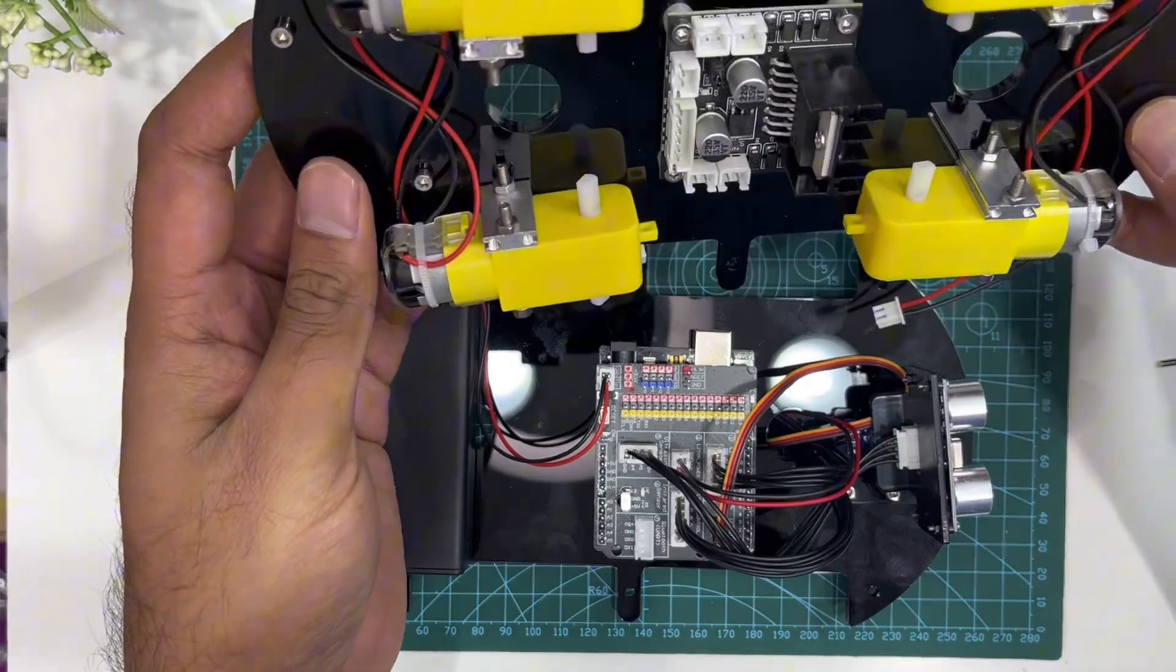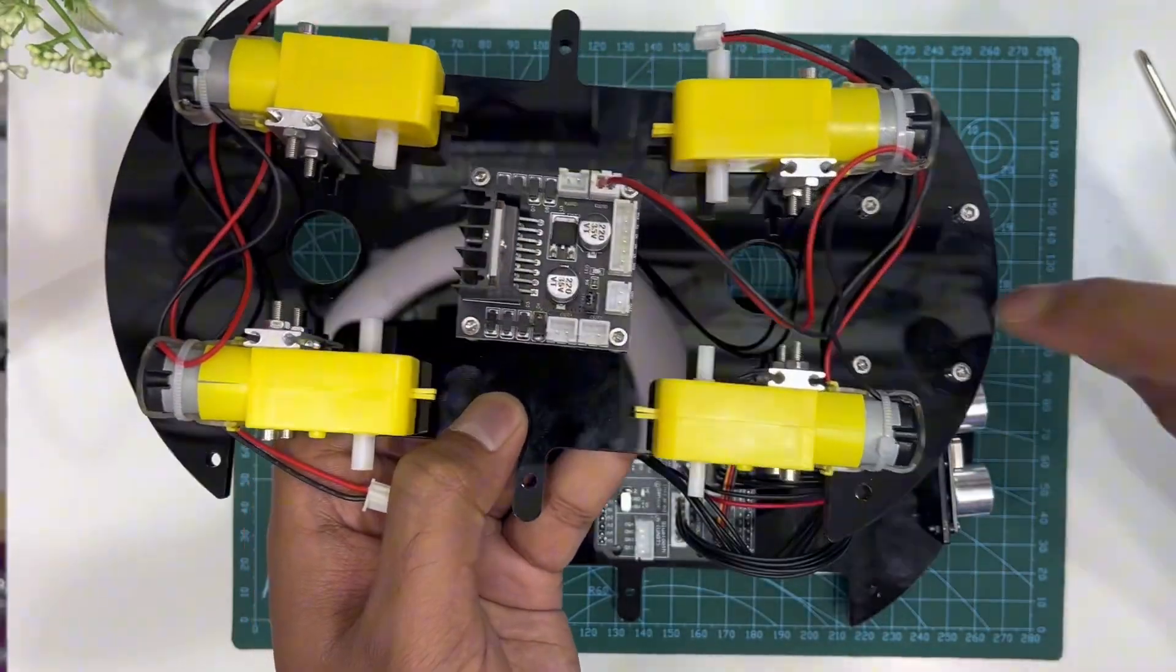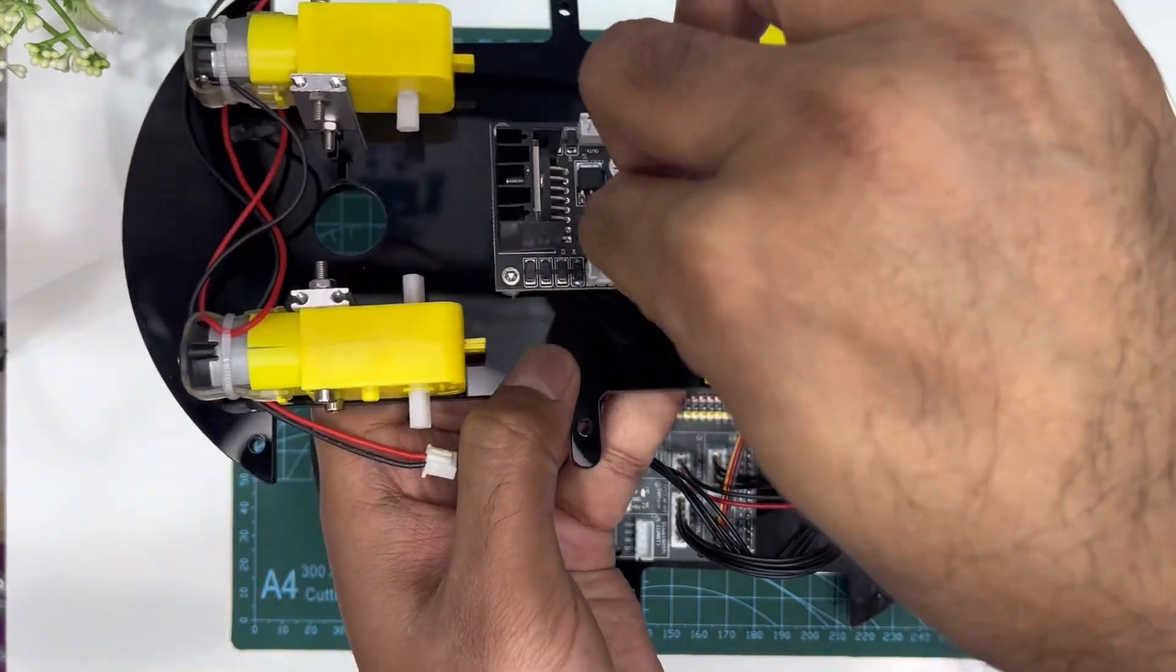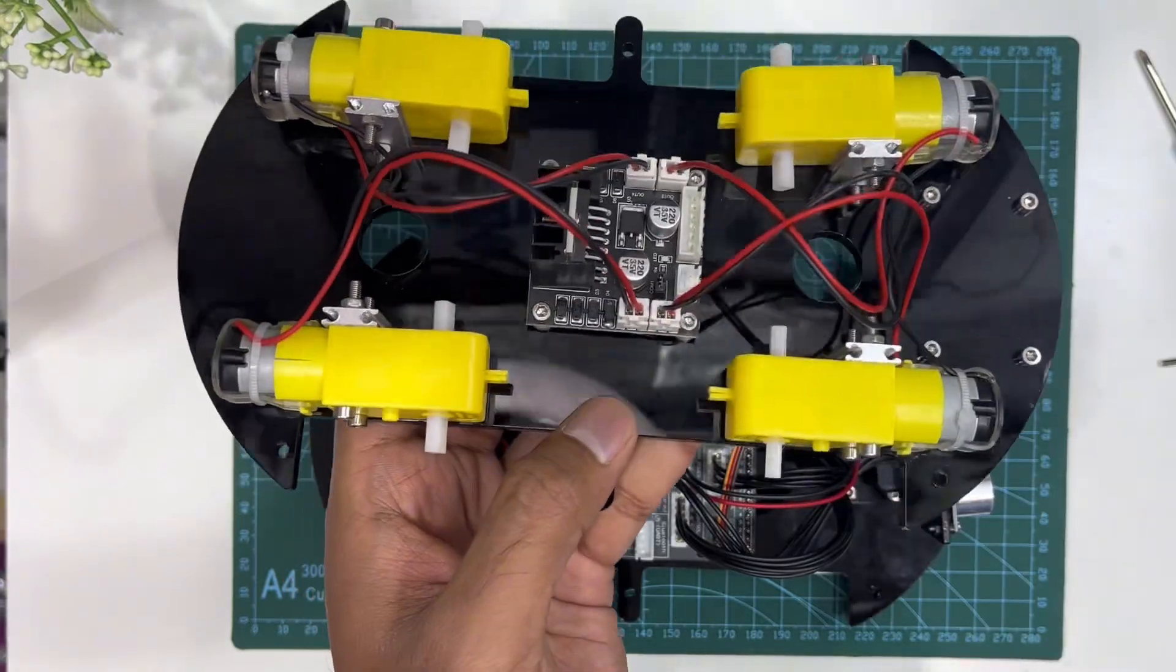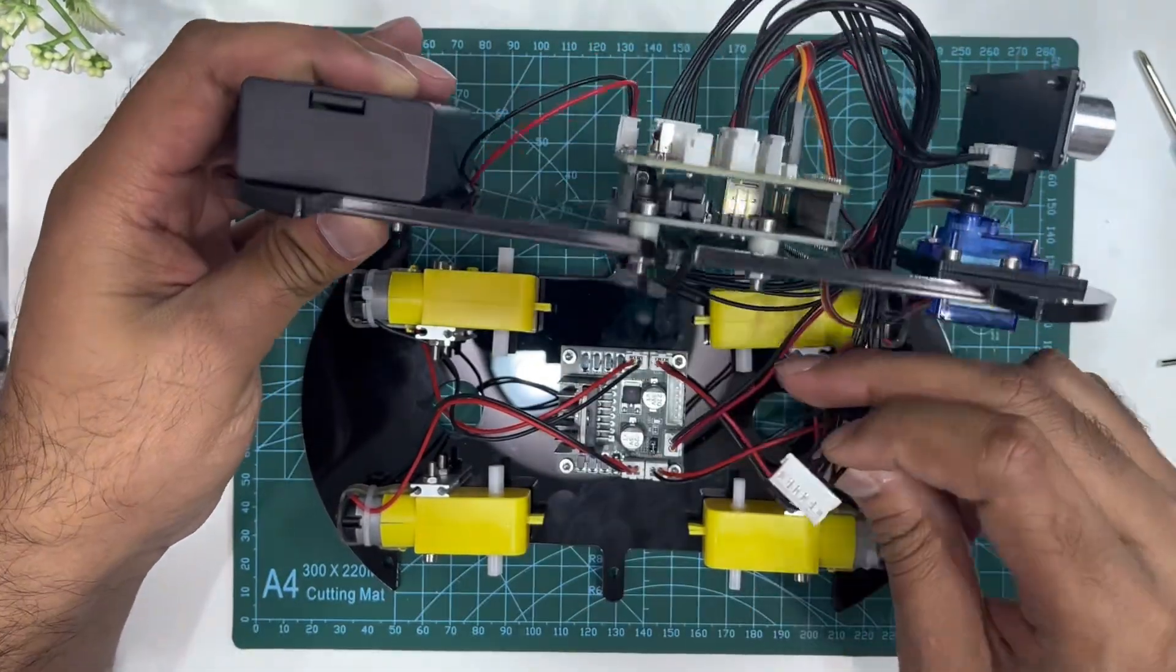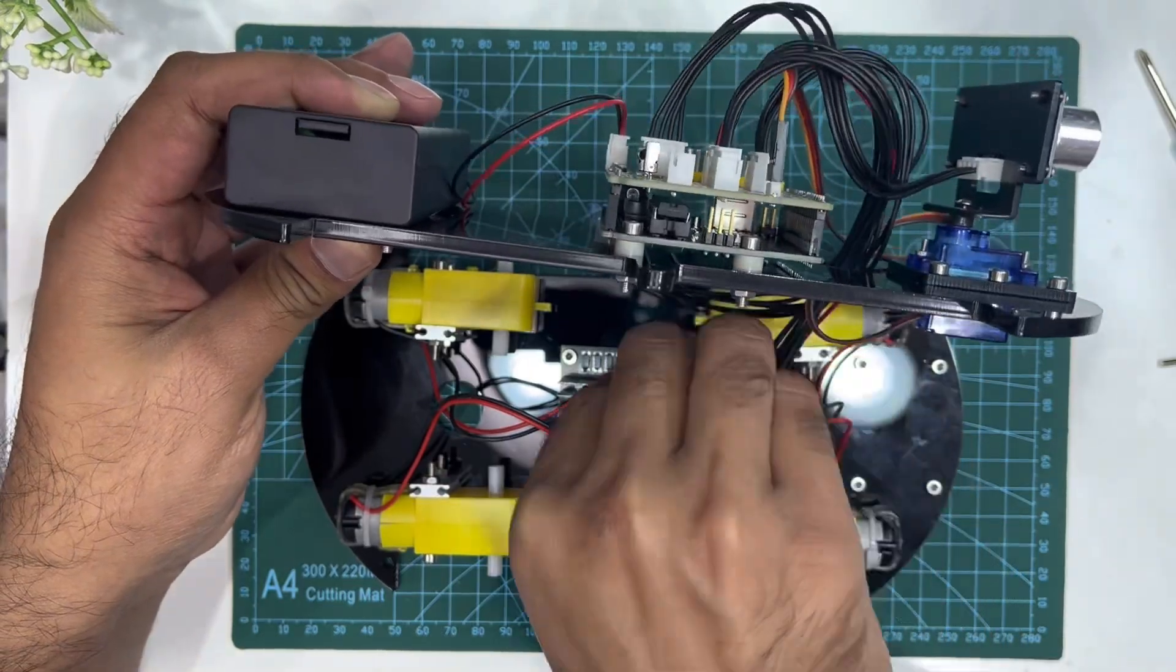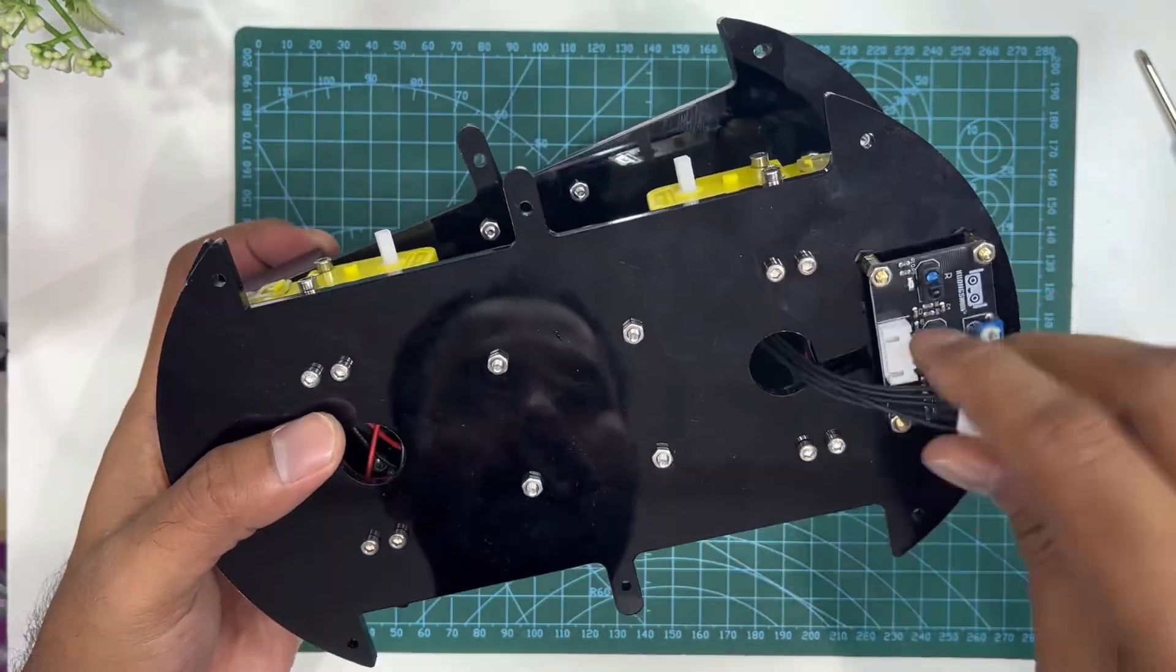Connect motors with the L298N motor driver. Connect motor driver's 2-pin and 6-pin cables. Finally connect line tracking module's 5-pin cable.